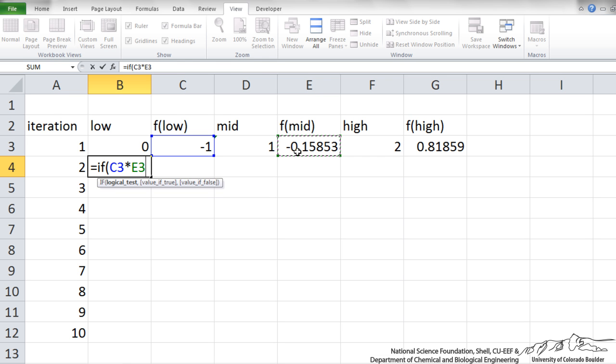If that is a positive value that means it does not cross the x axis. There is no zero. So if the function at the low multiplied by the function at the midpoint is negative that means that somewhere in that interval between 0 and 1 there has to be a zero. If that is the case we want to maintain an x value of the low bound. Otherwise we want to redefine the low as the middle.